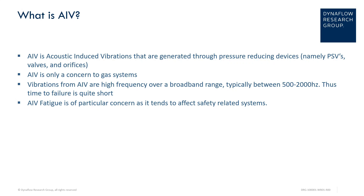AIV stands for acoustically induced vibrations. These vibrations are generated by gaseous flow passing through a pressure-reducing device such as PSVs, valves, and orifices. AIV induces a high-frequency broadband excitation that is typically over a range between 500 to 2000–2500 hertz.